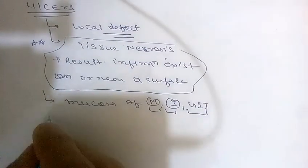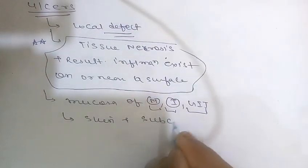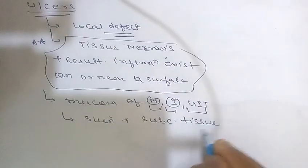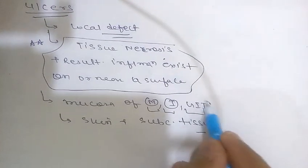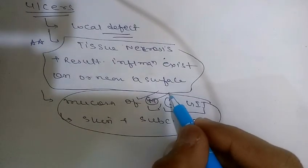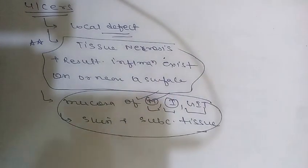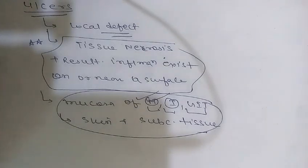The second common location for ulcers is the skin and subcutaneous tissue of the lower extremities in older persons who have circulatory disturbances predisposing to extensive ischemic necrosis. The most common ulceration is peptic ulcer of the stomach or duodenum, which will be discussed in a separate video.